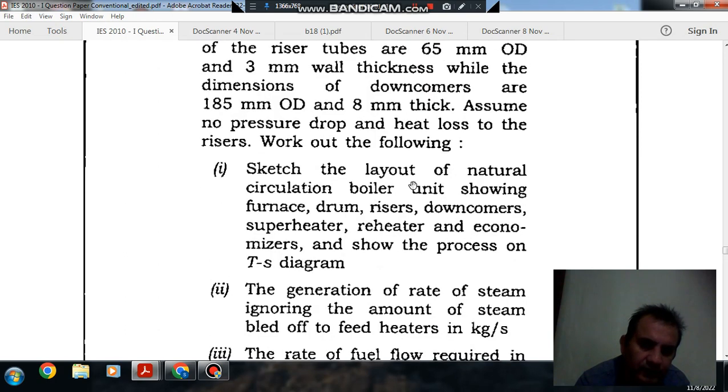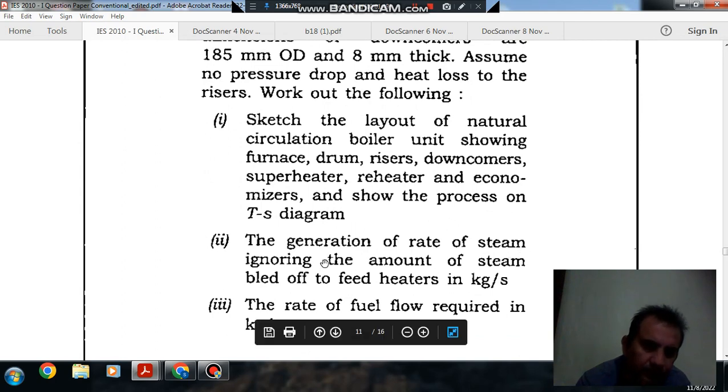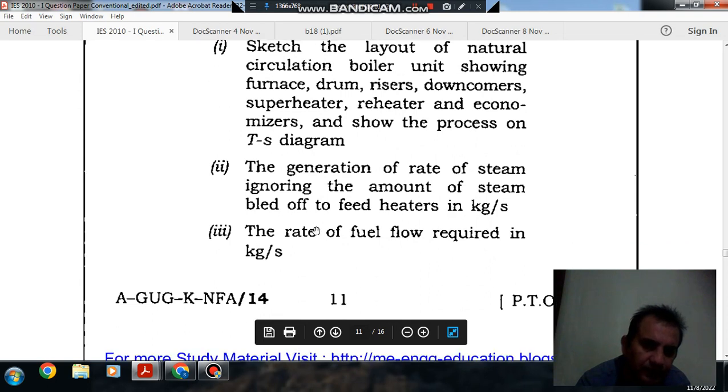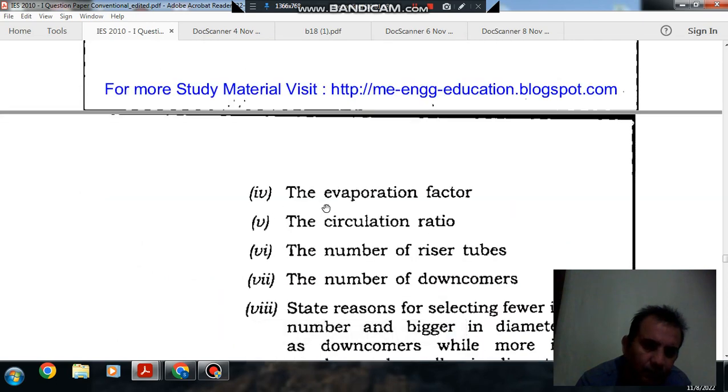Work out the following: 1. Sketch the layout of the natural circulation boiler also showing furnace, drum, risers, downcomers, superheater, heater and economizer and show a T-S diagram. 2. The generation rate of steam, ignoring the amount of steam bled off in kg per second. 3. Rate of fuel flow required in kg per second. 4. The evaporation factor.